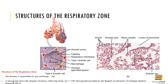Here you can see the structures of the respiratory zone, including the alveoli responsible for gas exchange, the alveolar ducts, the lumen of the bronchiole leading into the alveolar ducts, the alveolar sac, and the individual alveoli.